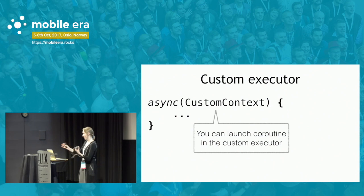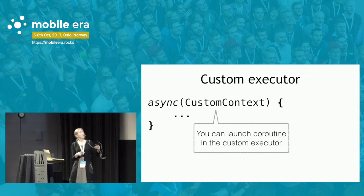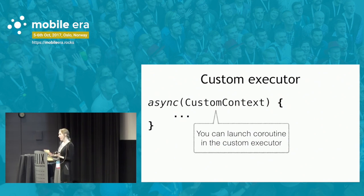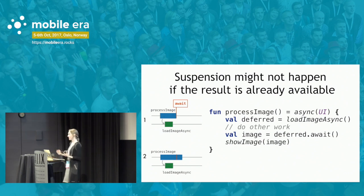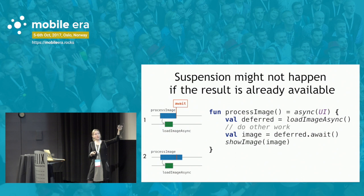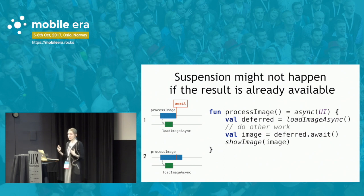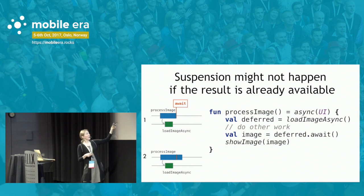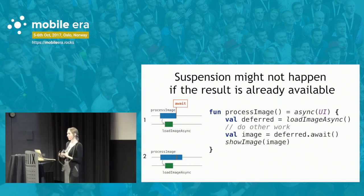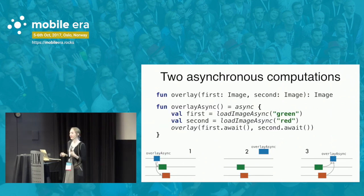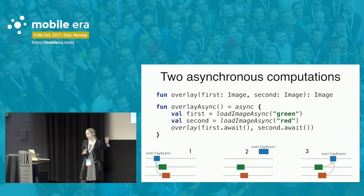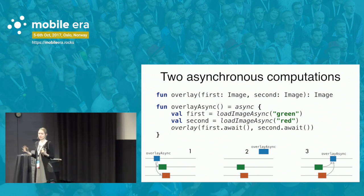Some general facts: suspension may not actually happen if the result is already available. For example, if you start loading an image, then do something else, and by that time the image is cached and the result is already available, then instead of suspending, you can just continue. There is also a code example illustrating the concept with two computations: starting from the main blue computation, starting two others, which was the earlier picture I used to explain general concepts.